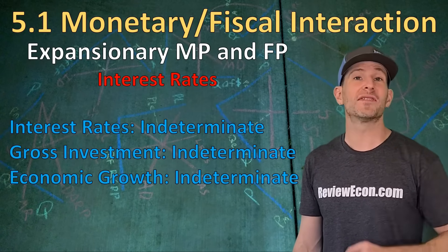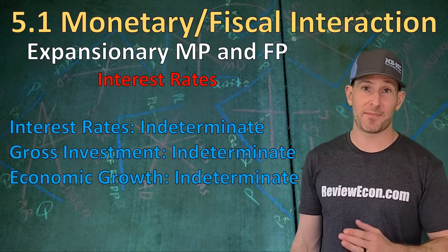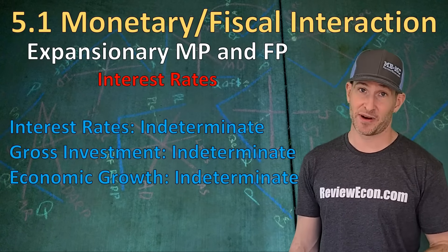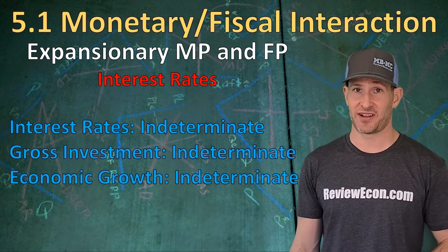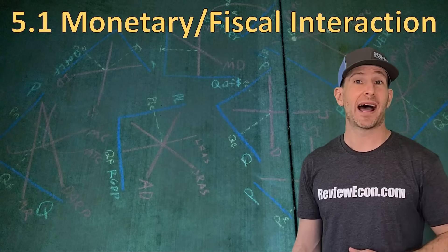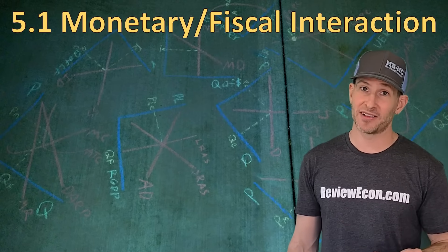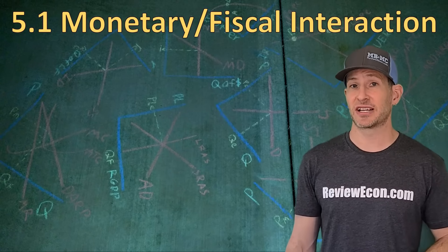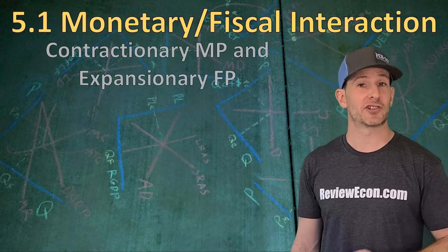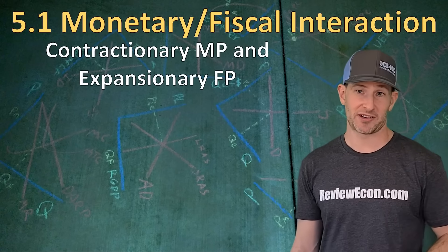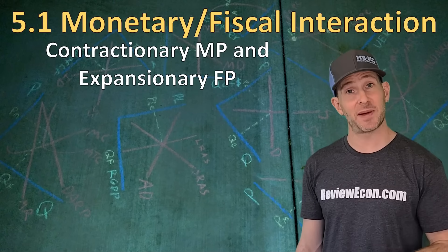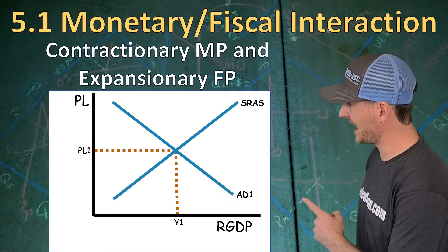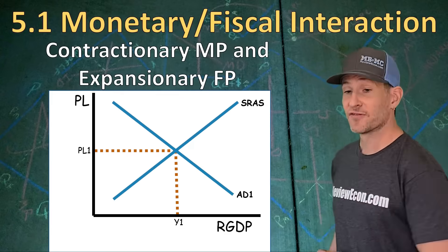A little side note: all of these things would be the opposite if we had contractionary monetary policy and contractionary fiscal policy. So what happens if monetary policy and fiscal policy go in opposite directions? If we have contractionary monetary policy and expansionary fiscal policy, here's the impact on the ASAD model.